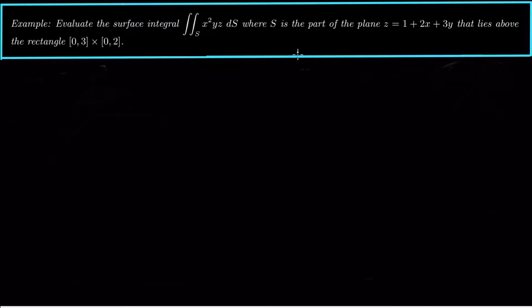Hey guys, what's up? Today we're looking at doing a surface integral of a scalar function. We want to be on the plane z equals 1 plus 2x plus 3y that lies above the rectangle x between 0 and 3 and y between 0 and 2.